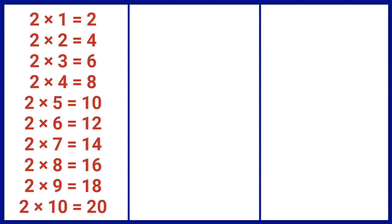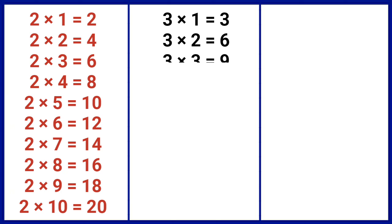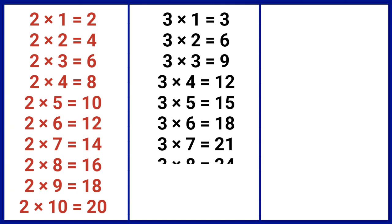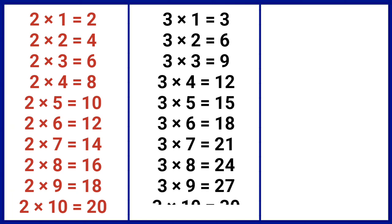3 1s are 3, 3 2s are 6, 3 3s are 9, 3 4s are 12, 3 5s are 15, 3 6s are 18, 3 7s are 21, 3 8s are 24, 3 9s are 27, 3 10s are 30.